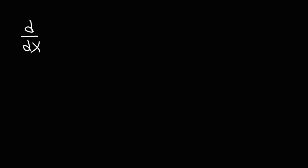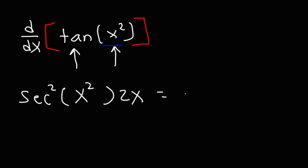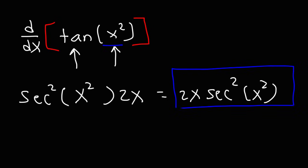Let's work on more examples. Find the derivative of tan(x²). The first thing we do is find the derivative of the outer function, tangent. The derivative of tangent is secant squared, and whatever is inside tangent — x squared — goes inside secant squared as the angle. Next, we find the derivative of the inside part, x squared, which is 2x. So the final answer is 2x · sec²(x²). That is the derivative of tan(x²).